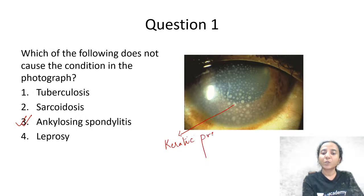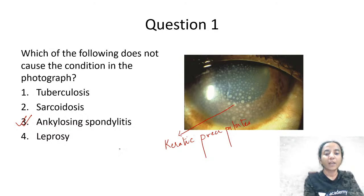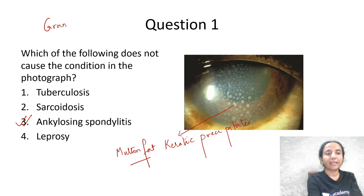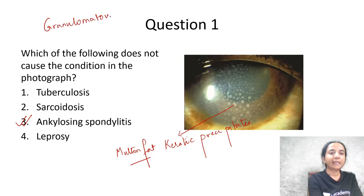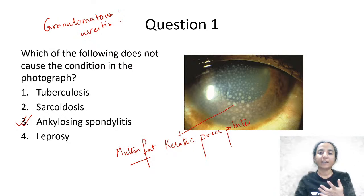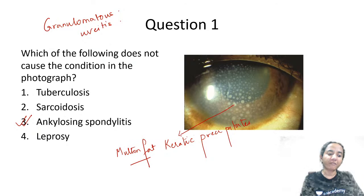This is basically a picture of uveitis. To be more precise, look at these keratic precipitates — they are large and coarse. These are called mutton fat KPs, and mutton fat KPs are seen in granulomatous uveitis. In non-granulomatous uveitis, the deposits on the corneal endothelium are very fine and very small, whereas these are large and coarse.